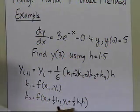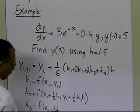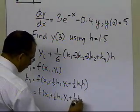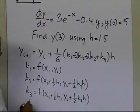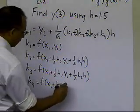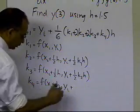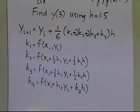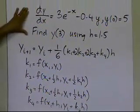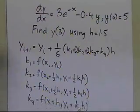k3 is similarly calculated at the halfway midpoint, but uses the slope k2 to compute the approximate y value. k4 is the function f evaluated at the point where you want to go, xi plus h, with the corresponding y computed as y sub i plus k3 times h. We will now use this RK4 formula with h equal to 1.5 to calculate y sub 3.